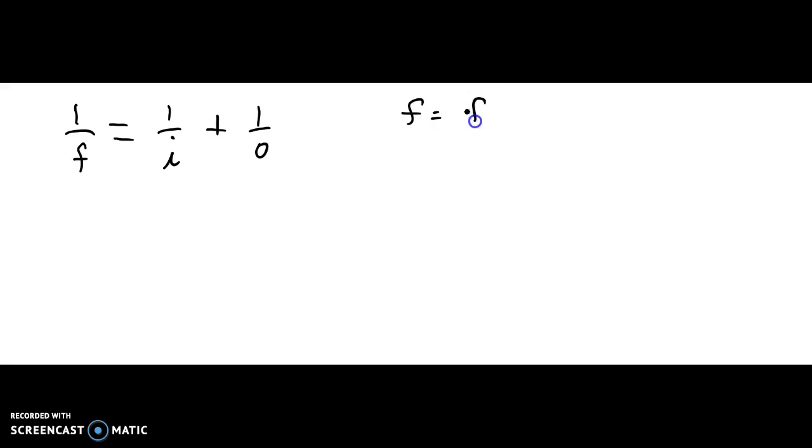So I'll write it up here. f equals the focal length, i equals the image distance, and o equals the object distance.